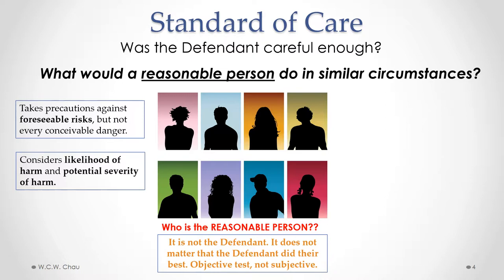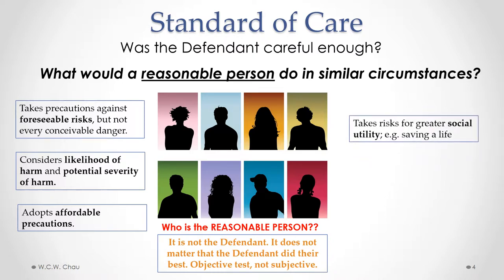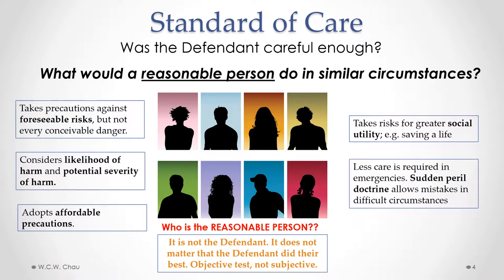Another thing that a reasonable person would do is adopt affordable precautions to prevent mishap, accidents, or injury. So a reasonable person does consider the cost — there is a cost-benefit analysis that a reasonable person would apply. A reasonable person takes risks where social utility is involved, and would take greater risk in an emergency situation, such as when trying to save someone's life. Related to that is also the sudden peril doctrine, which allows a reasonable person to make mistakes in difficult circumstances, especially in an emergency. So we cut a person more slack in an emergency situation.